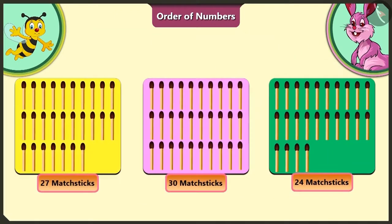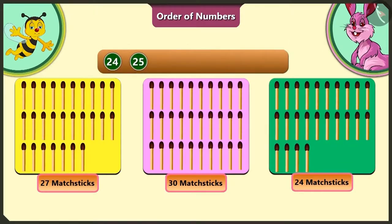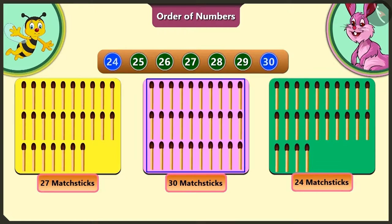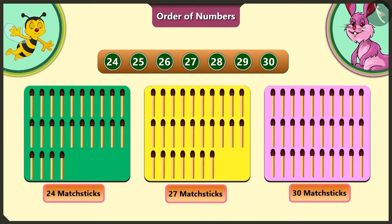So you would have understood that counting in order, we get 24, 25, 26, 27, 28, 29 and 30. Here the green card has the least matchsticks and the pink card has the maximum number of matchsticks. So if we have to arrange them in order from small to big, we will place the green card ahead of all, then the yellow card and the pink card in the end.